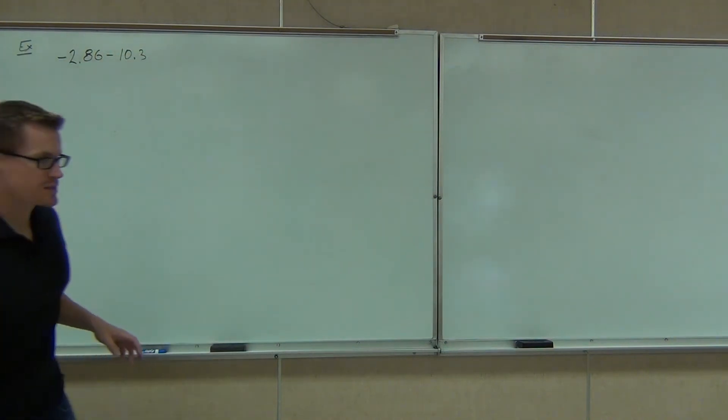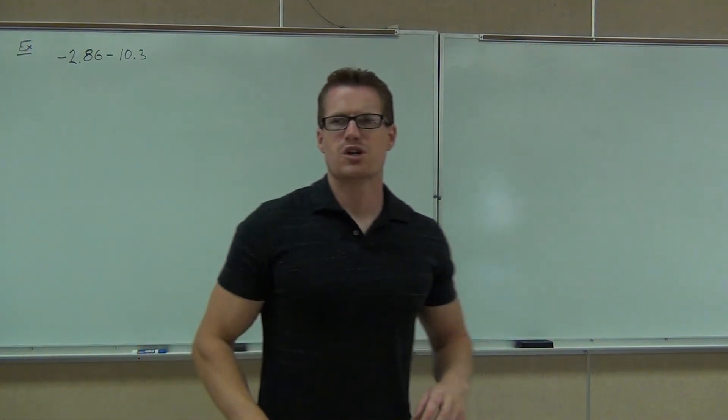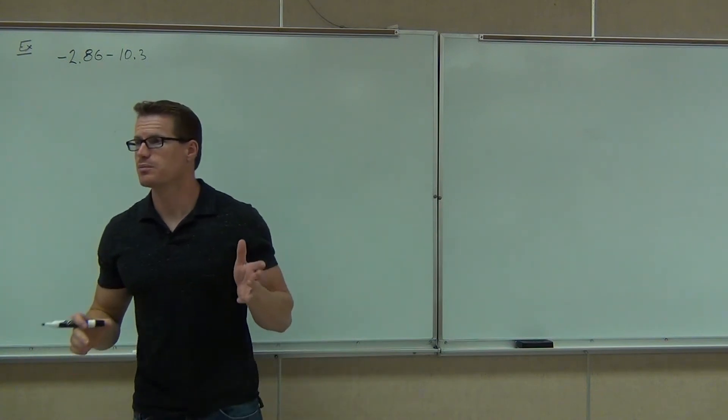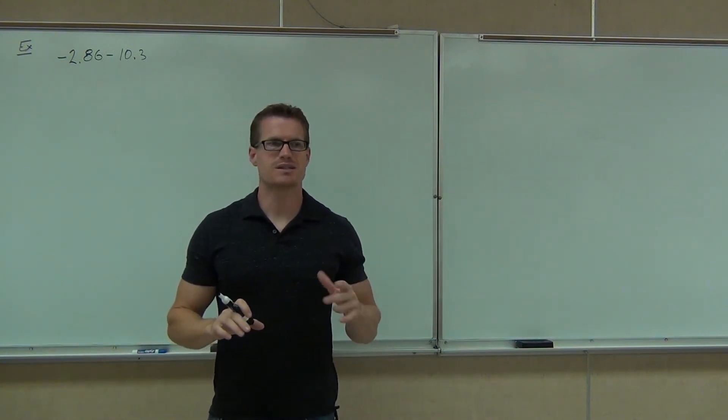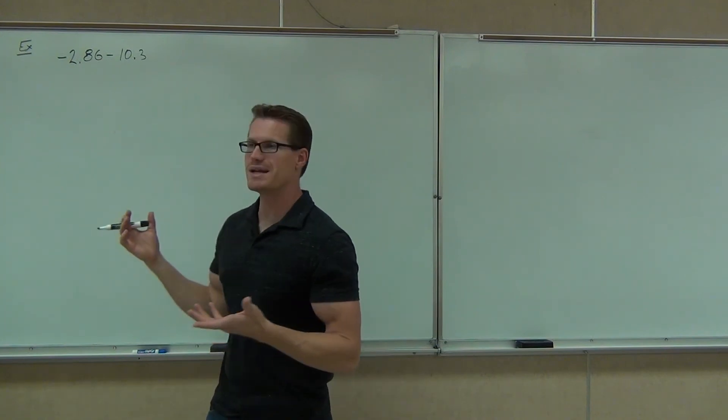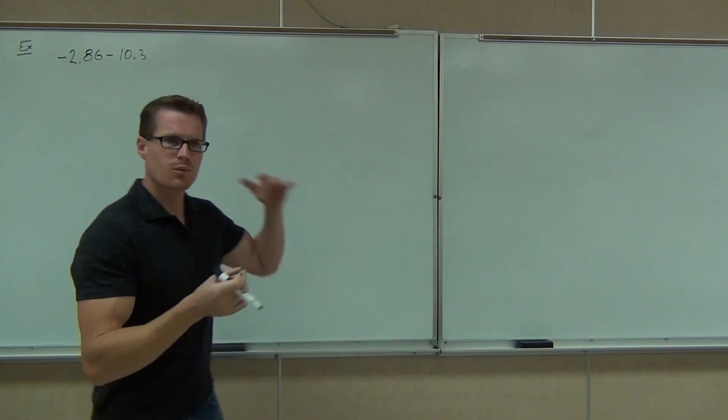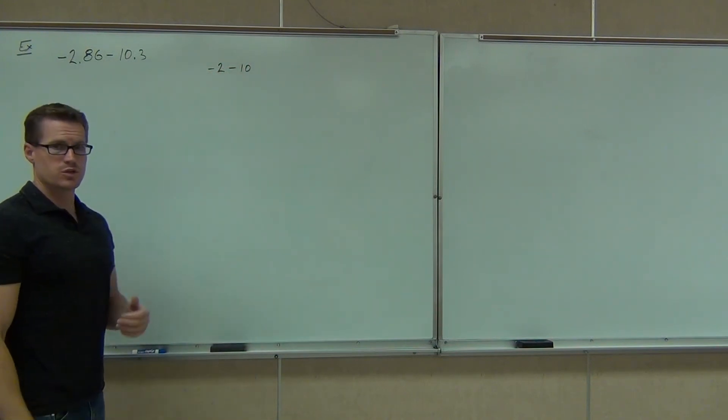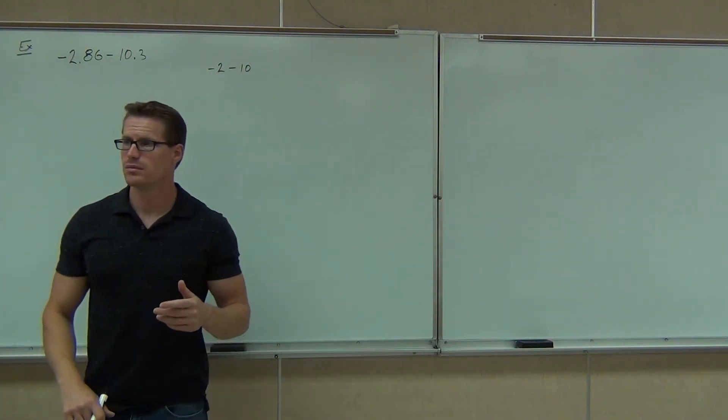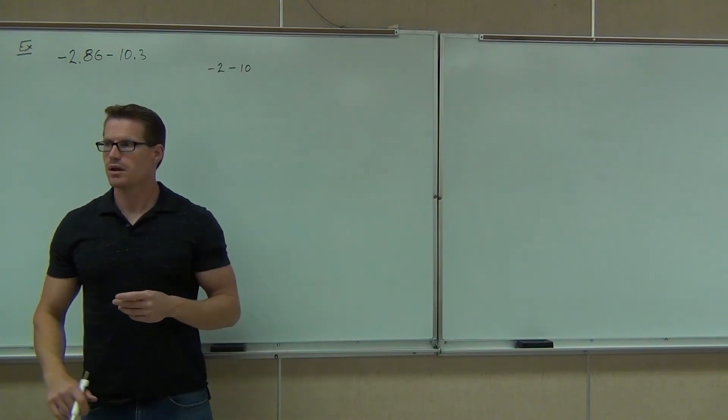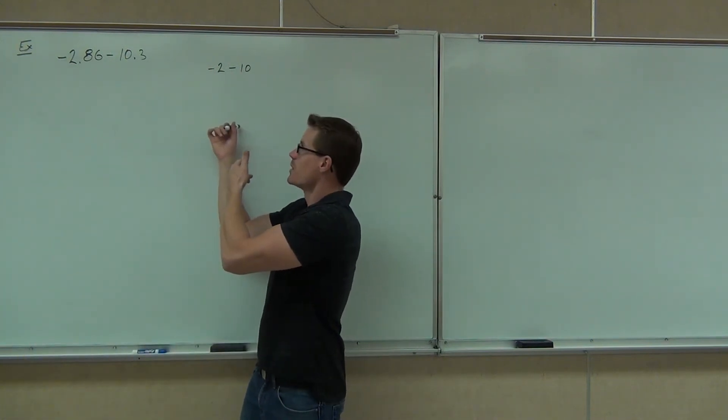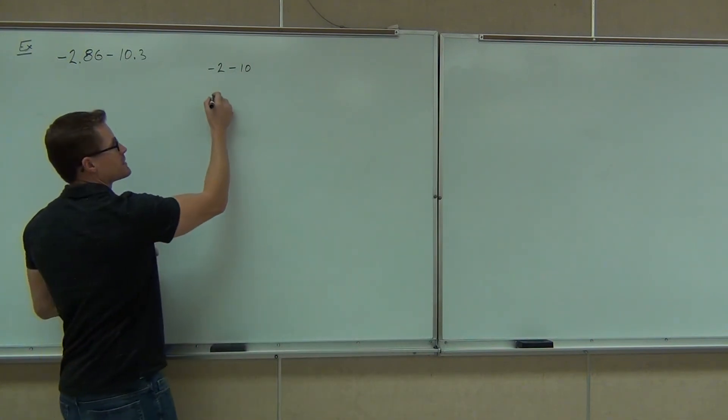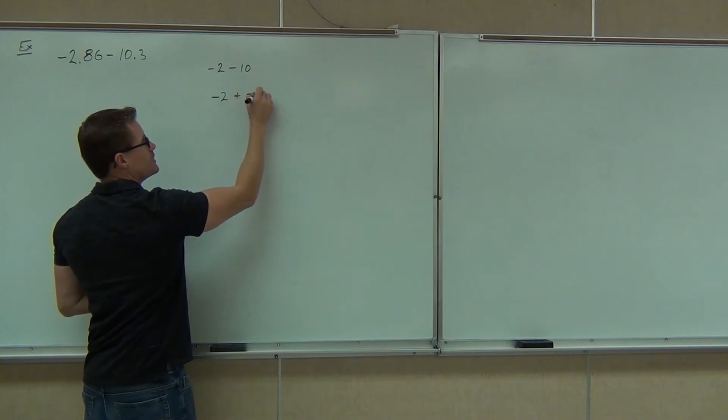So negative 2.86 minus 10.3. First off, if you ever get confused on what to do with decimals, the first thing I want you to think of, or maybe even write this on the board, eliminate the decimals and see what you would do then. For instance, if you're like, wow, I have no idea what to do with that problem. Well, think about it in your head. What would you do with negative 2 minus 10? Would you be able to do that problem? I hope so. Yeah, because the same thing you do on this problem, you can apply that to this problem.